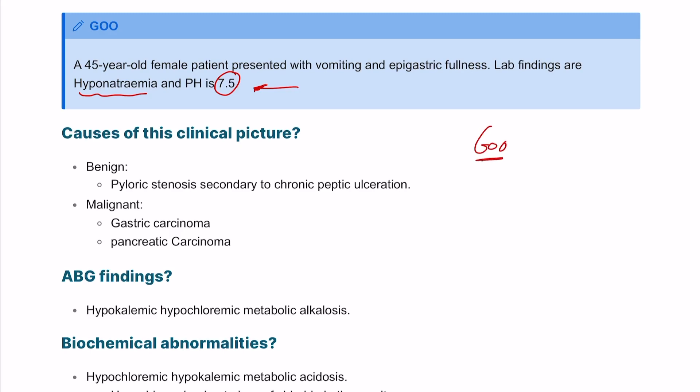Gastric outlet obstruction is a condition where the pyloric antrum or gastric outlet is obstructed. This can be due to cancer from the inside or fibrosis from a chronic peptic ulcer. These are the two common causes for gastric outlet obstruction.